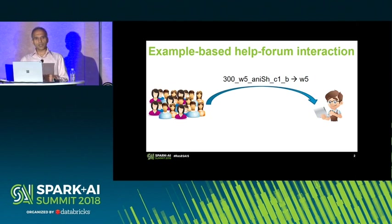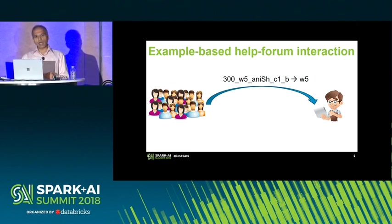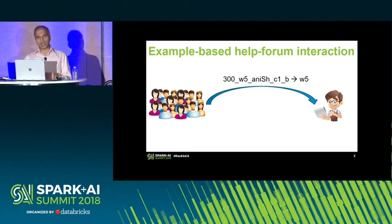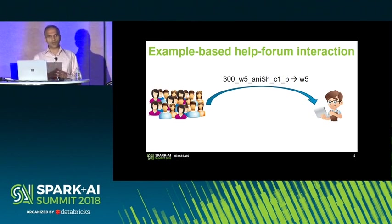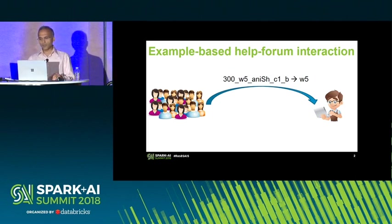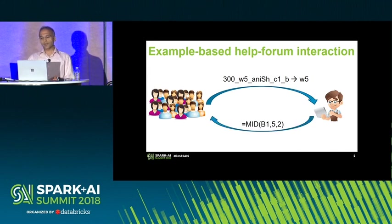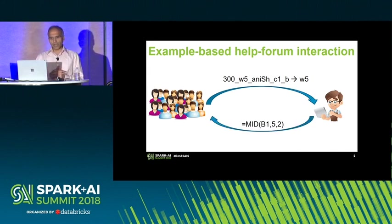An end user on the left side would ask the expert on the right side to give them a program that can transfer the string on the left side of the arrow to the string on the right side. The expert takes a look at this input-output example and sends back a program — in this case, one that extracts the first two characters starting at the fifth one.